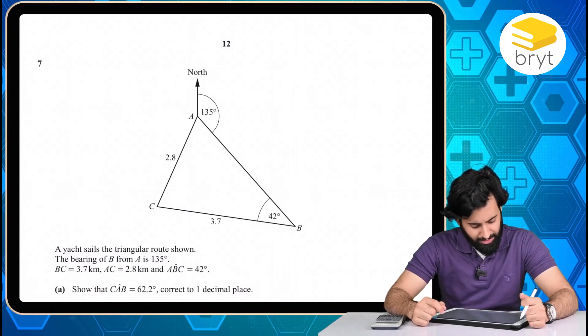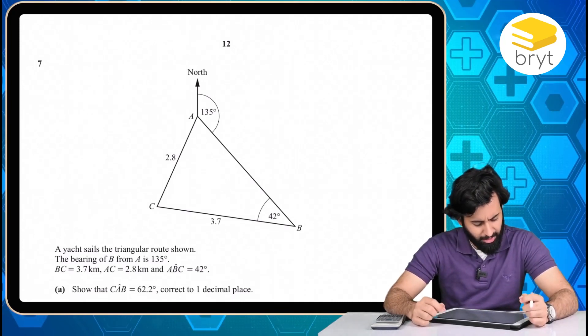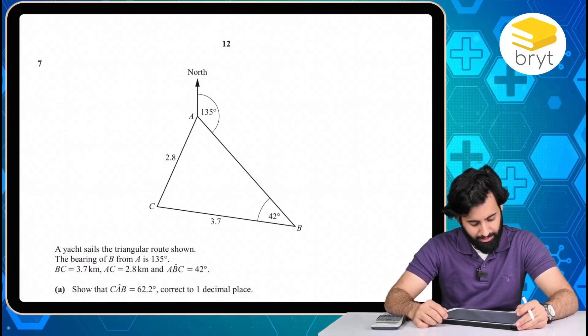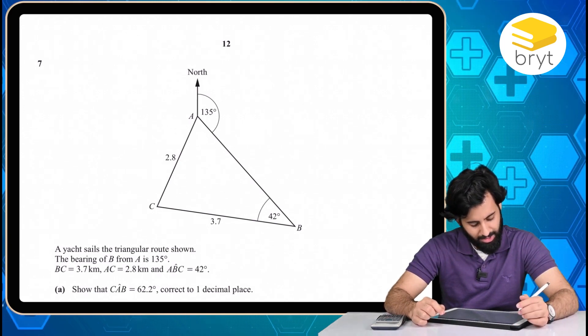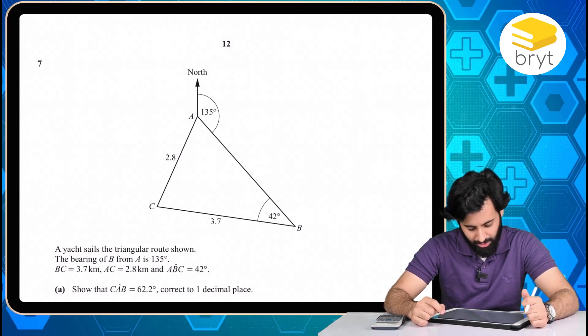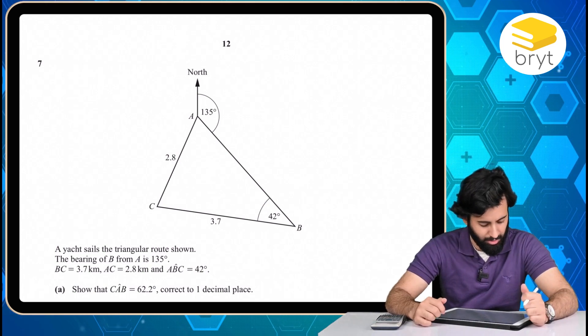A yacht sails in the triangular route shown. The bearing of B from A is 135 degrees. BC is equal to 3.7 kilometers. AC is equal to 2.8 and angle ABC is equal to 52 degrees. Alright, great.